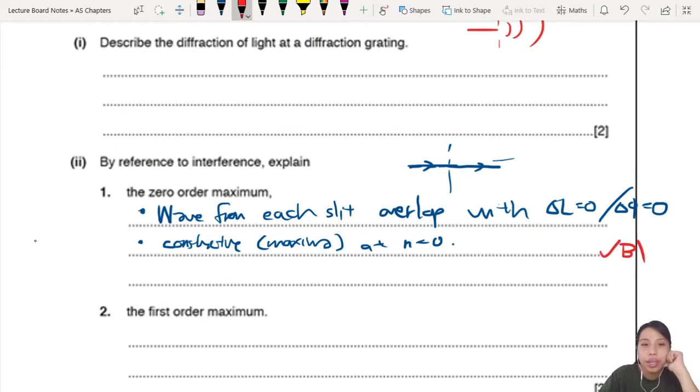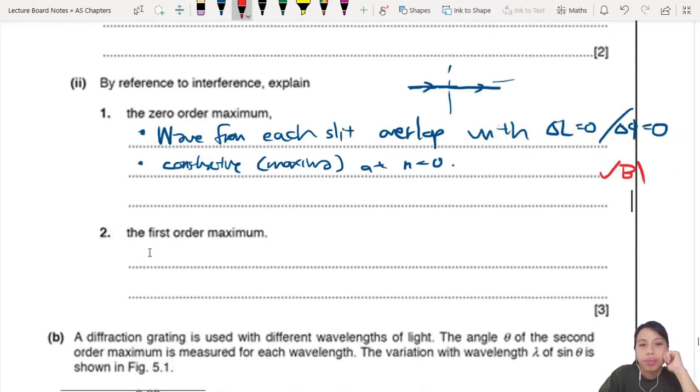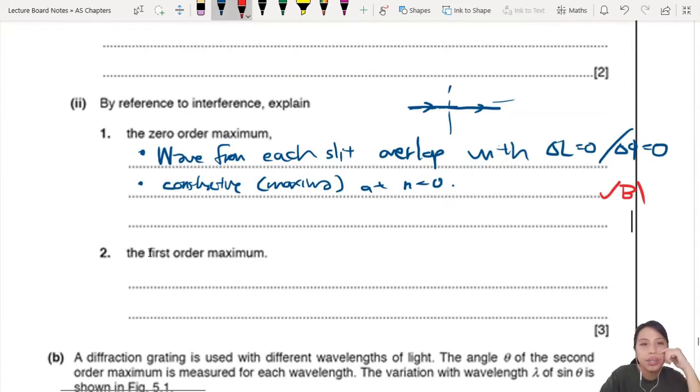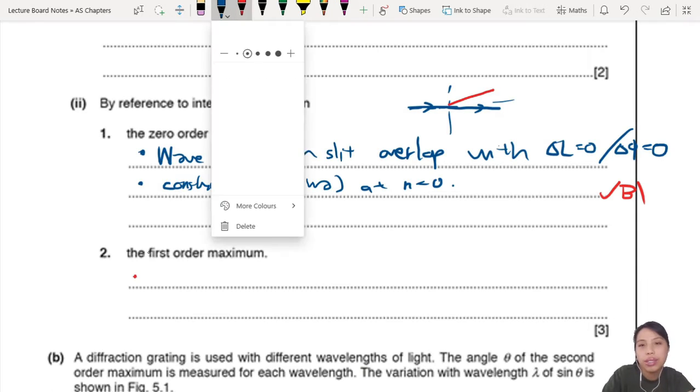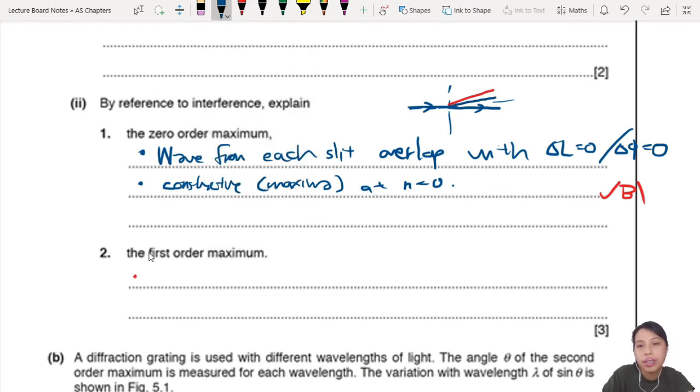First order maximum - how would you describe that? Same thing, except that now you're looking at first order maximum. So your colors would spread out differently - your blue won't spread out as much, your red will spread out more. So you can say now your waves...